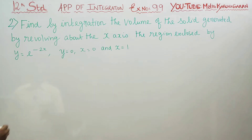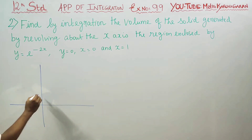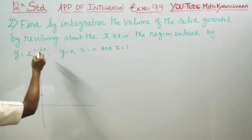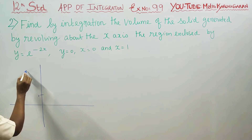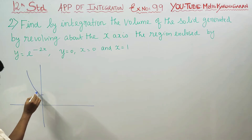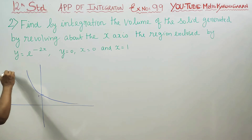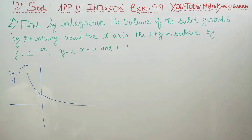The curve is y = e^(−x). Looking at the graph, when x = 0, y = 1. The curve y = e^(−2x) goes like this — this is a graphical notation showing how the curve behaves.